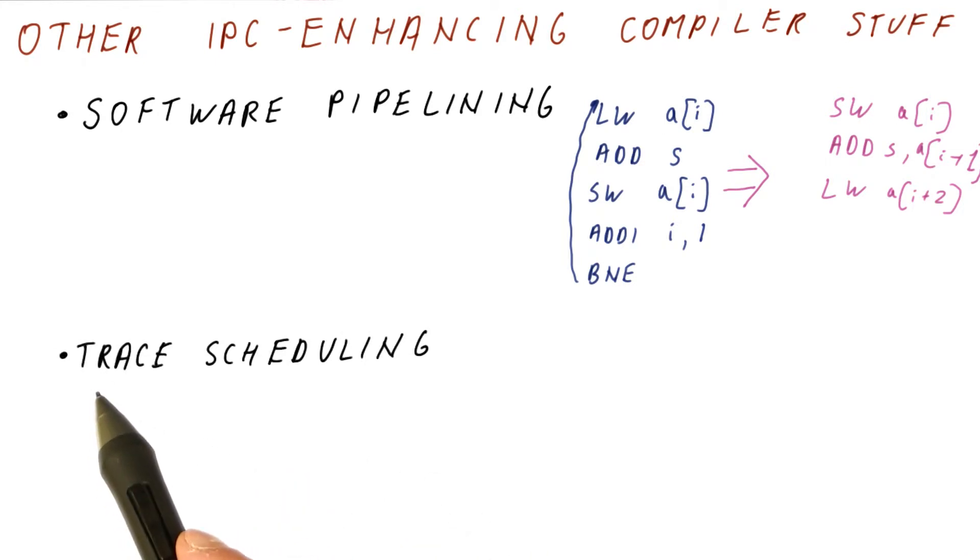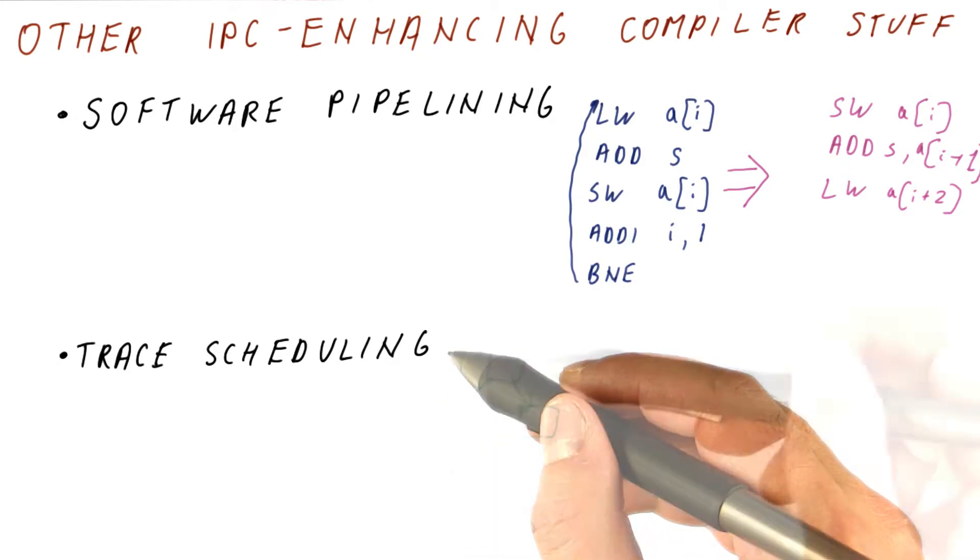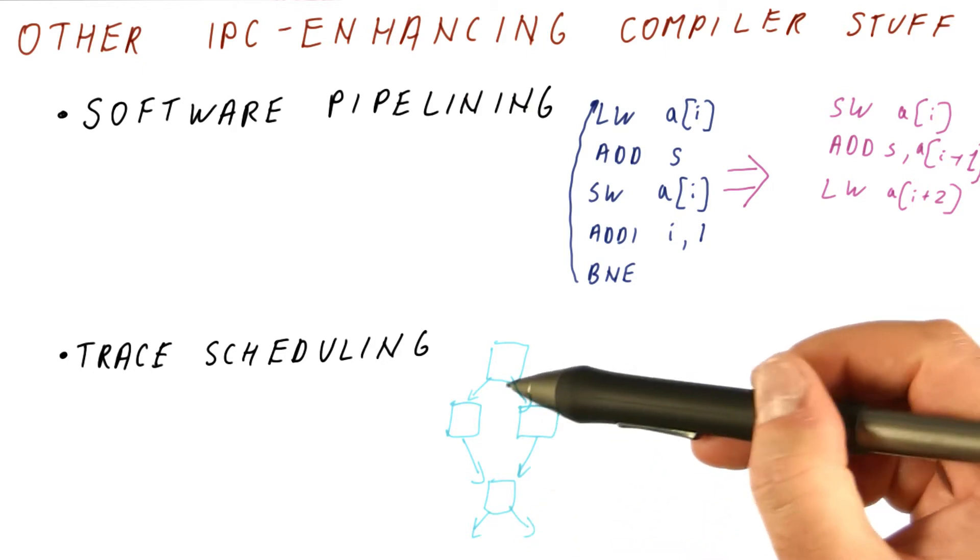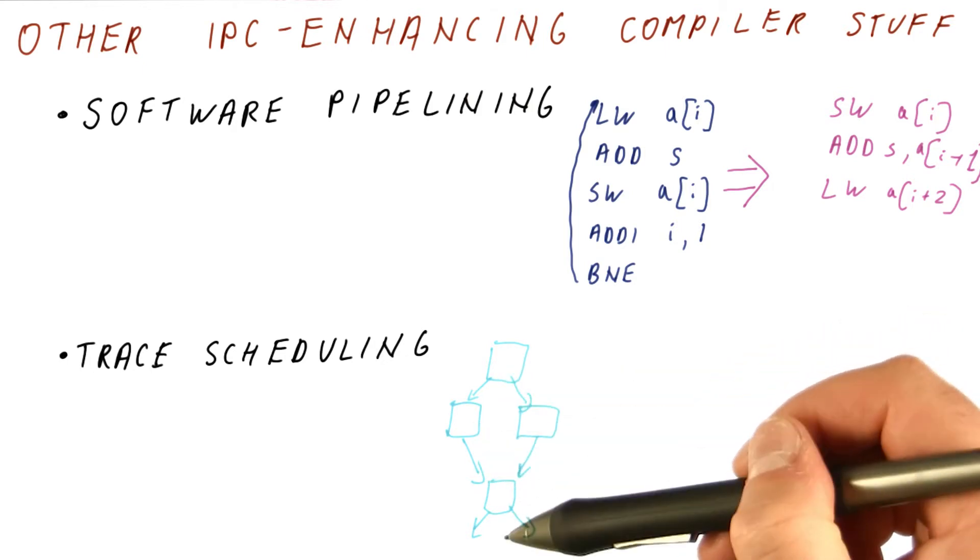And another technique that is very powerful is trace scheduling. You can think of trace scheduling as if conversion on steroids. Conceptually, we take a code that has branches because of if then else's and other things.